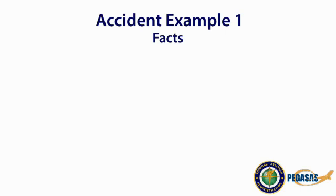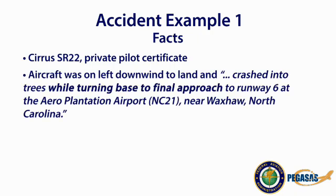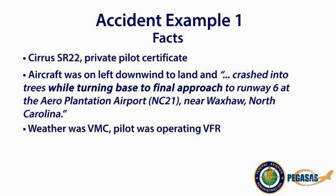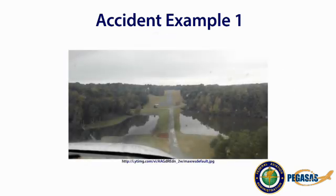In accident example number one, the facts are that it was a Cirrus SR-22 flown by a private pilot certificated individual. The aircraft was on left downwind to land, and from the accident report, crashed into trees while turning base to final approach to runway six at the Arrow Plantation Airport near Waxhaw, North Carolina. The weather was VMC, or visual meteorological conditions, and the pilot was operating VFR. Winds at a nearby airport reported at 310 degrees at 11 knots, gusting to 20 knots.